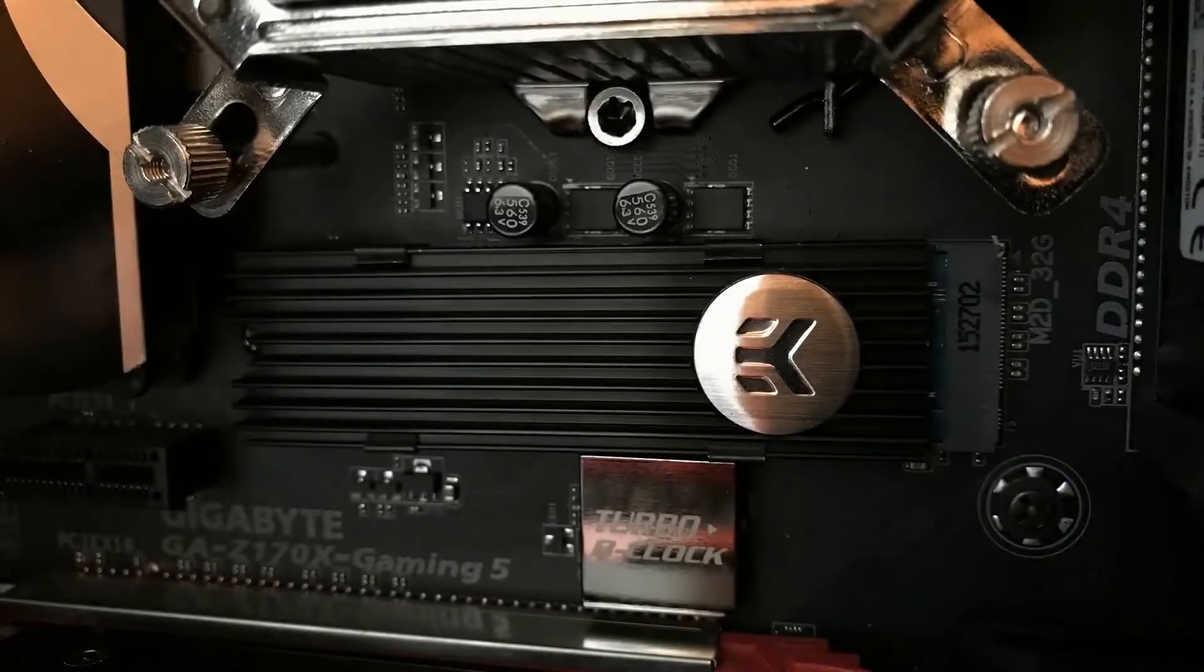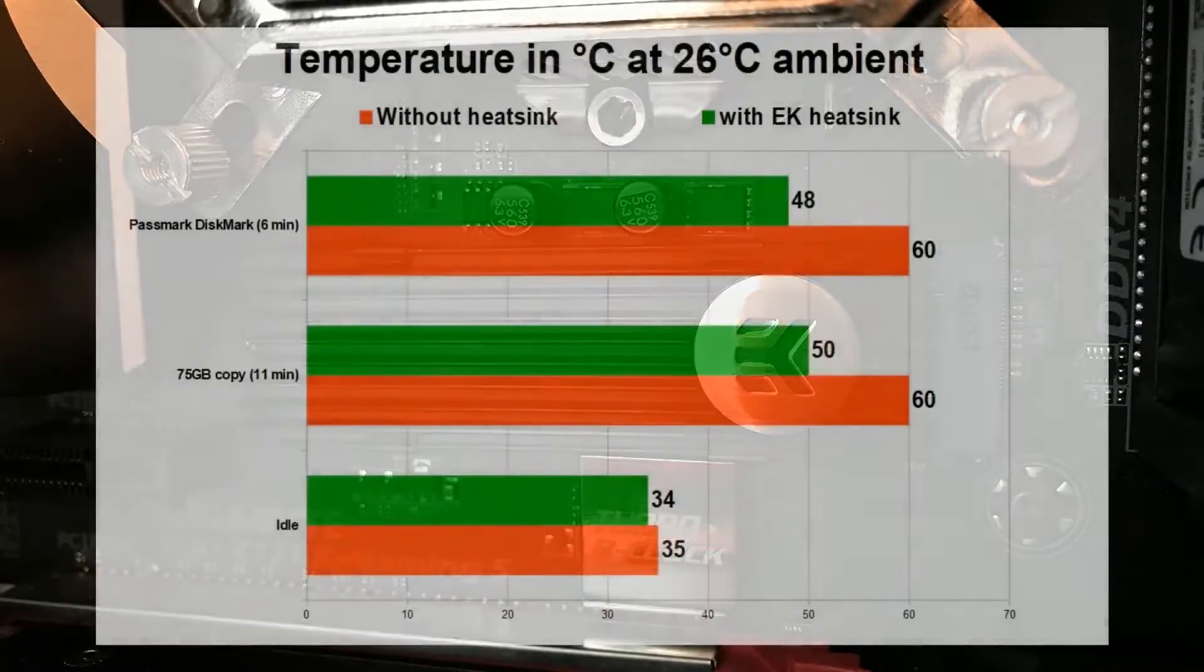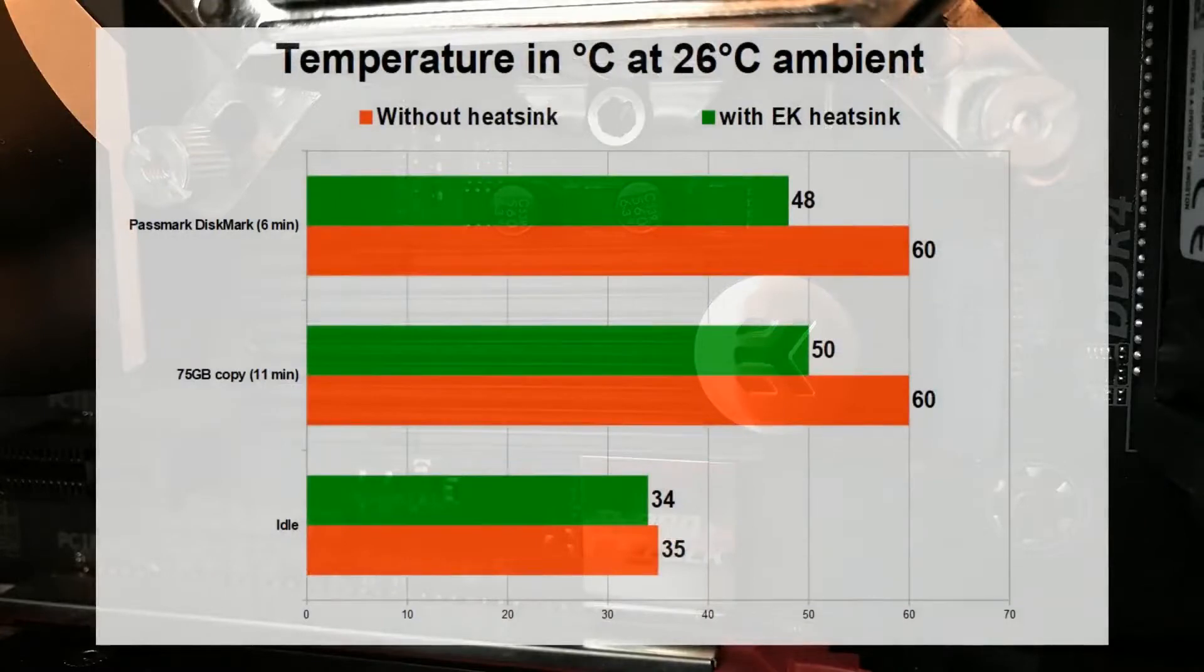To begin with, the fin design maximizes the heat dissipation area, which is why this is one of the most effective M2 Heatsinks out there. Depending on the specific situation, you'll notice a decrease in temperatures anywhere from 7 to 30 degrees, which is no small feat.